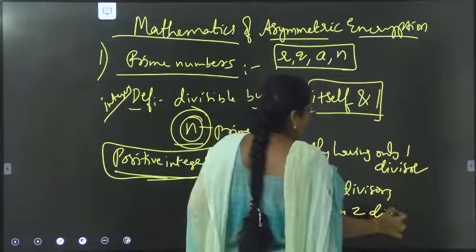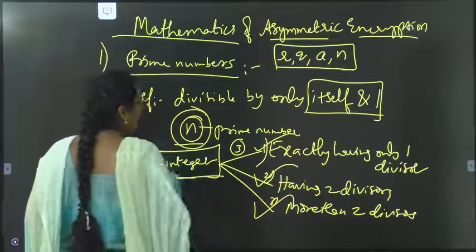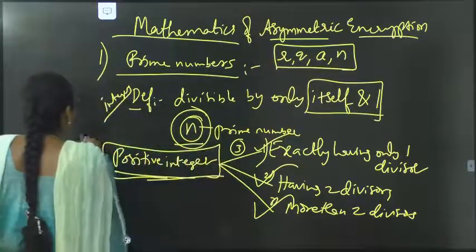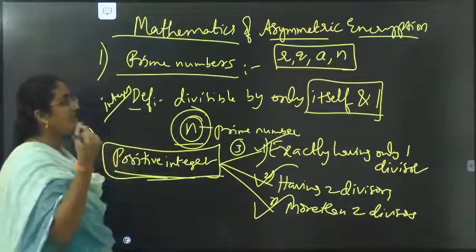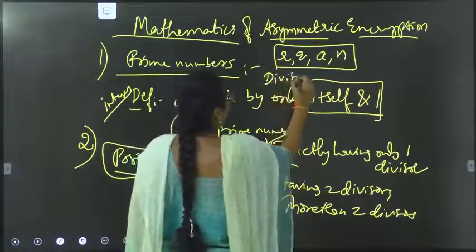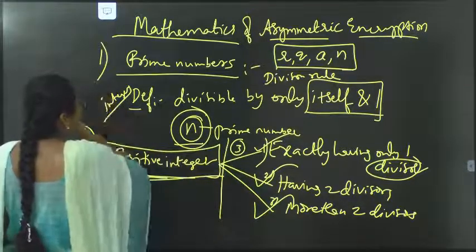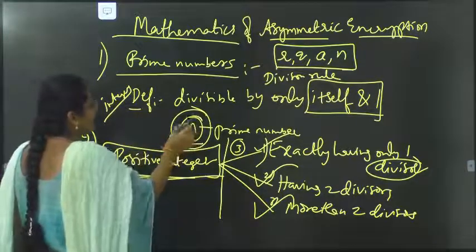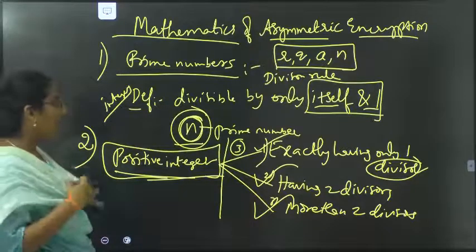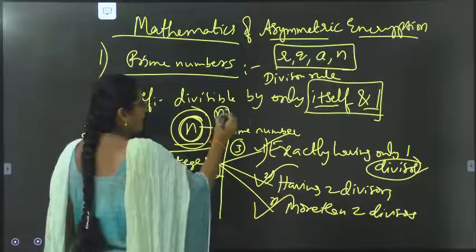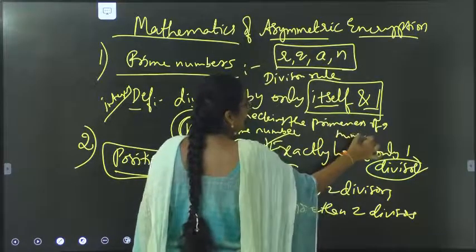The second point is that all positive integers are divided into three types: having exactly one divisor, having two divisors, and having more than two divisors. The third point is checking the primeness of a number. If n is the number, the rule is: n should be divisible by all prime numbers less than the square root of n.